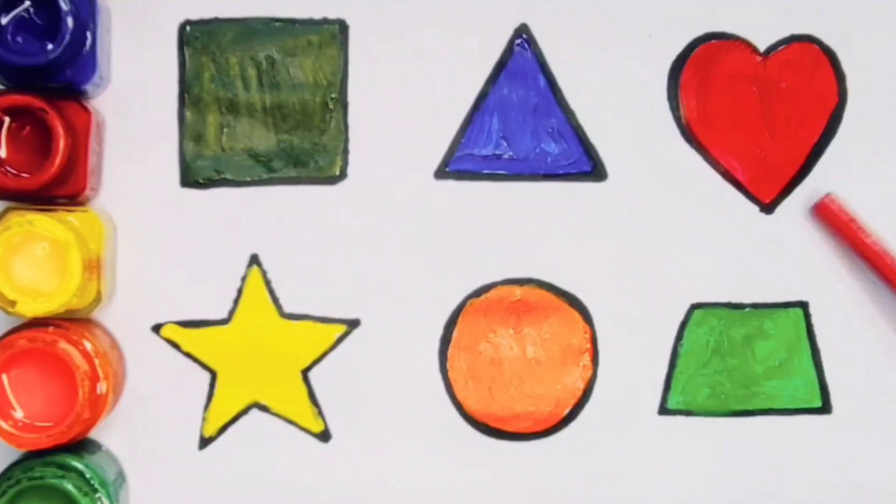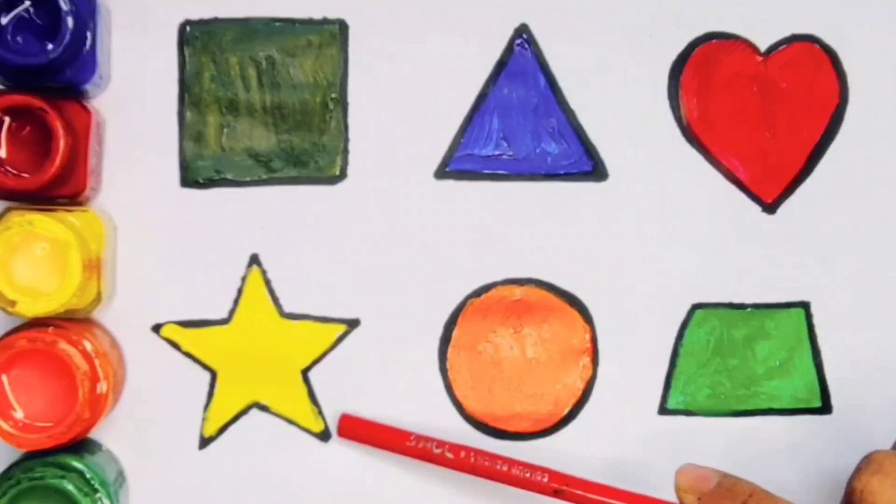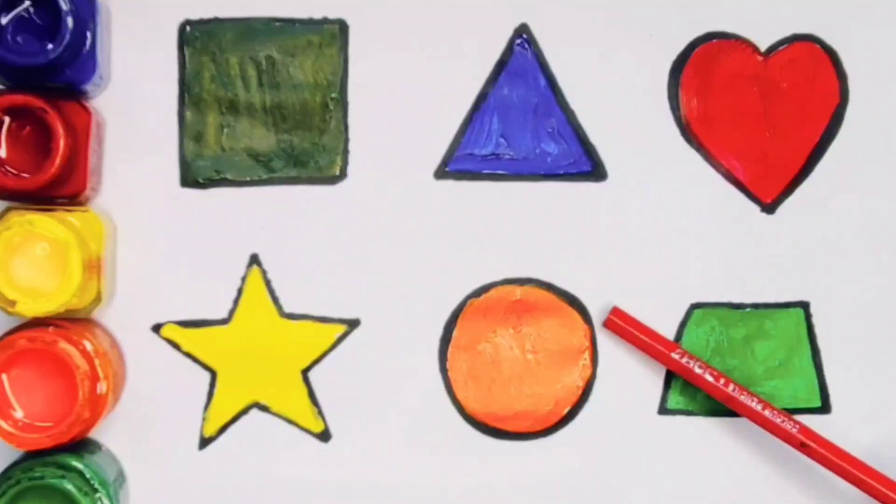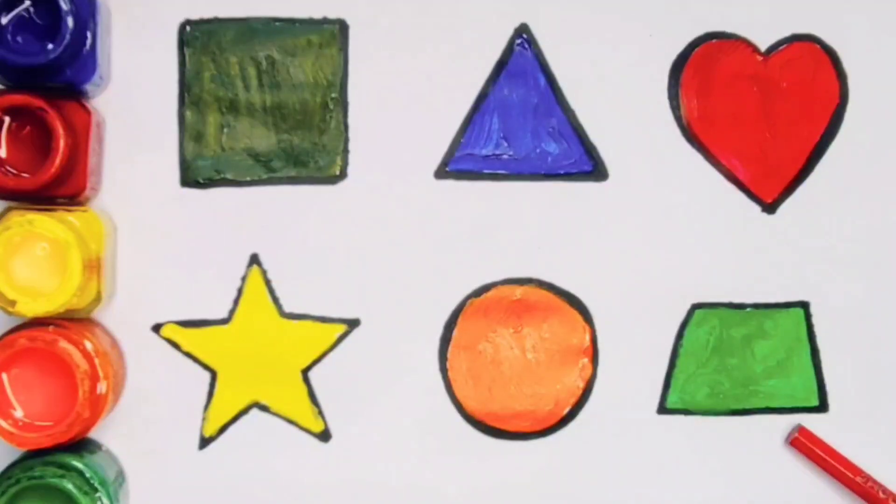Heart, red color. Star, yellow color. Circle, orange color. And trapezium, light green color.